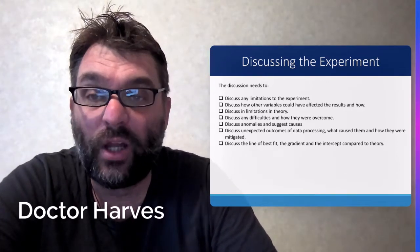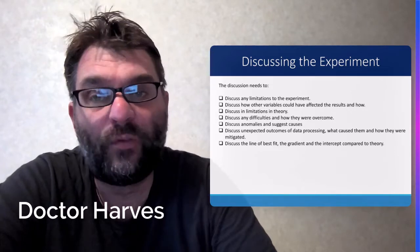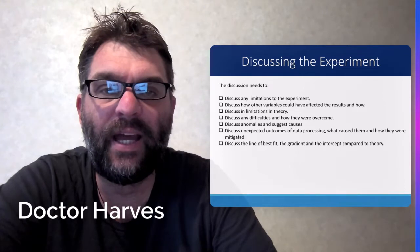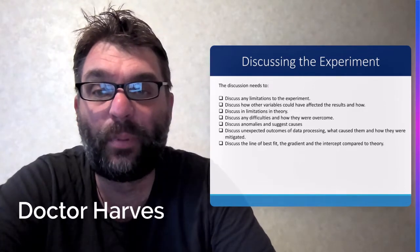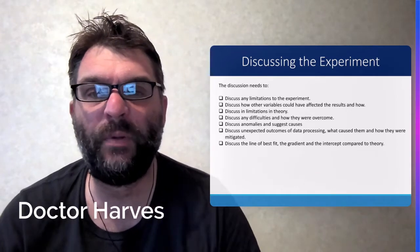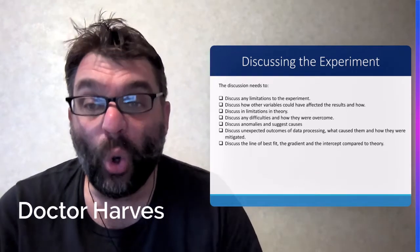Discuss potential anomalies you would have gotten in your data or could have gotten in your data and suggest what caused these anomalies. Then any unexpected outcomes from the data processing. So maybe massive errors, potentially some of your values. What caused them.